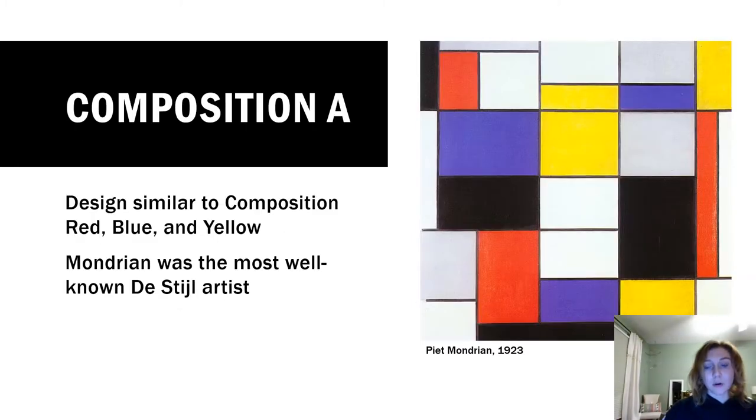This is another work by Mondrian. The other one featured large-scale rectilinear shapes, while this one includes smaller-scale rectilinear shapes, maybe halved shapes of other forms that occur in the work. Again, we can see the use of neutral colors along with only primary colors.